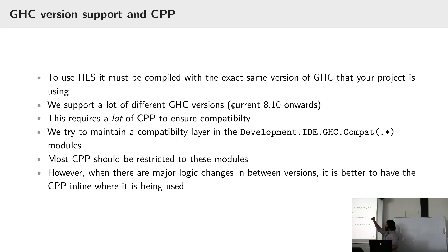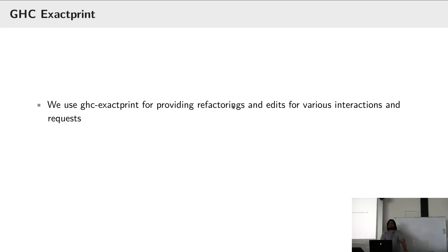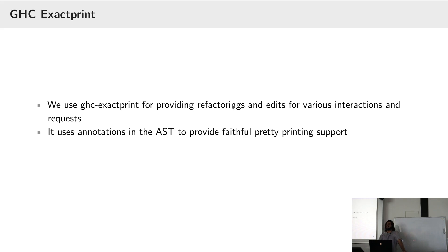We also use GHC ExactPrint, which is what we use to compute edits. The new GHC ExactPrint API is much improved. GHC ExactPrint lets you print out source exactly as the user wrote it — it has annotations for how many spaces there are, where the comments are, where brackets start and end, all the little details that compiler developers don't care about. All of that is stashed inside the AST by means of ExactPrint annotations.